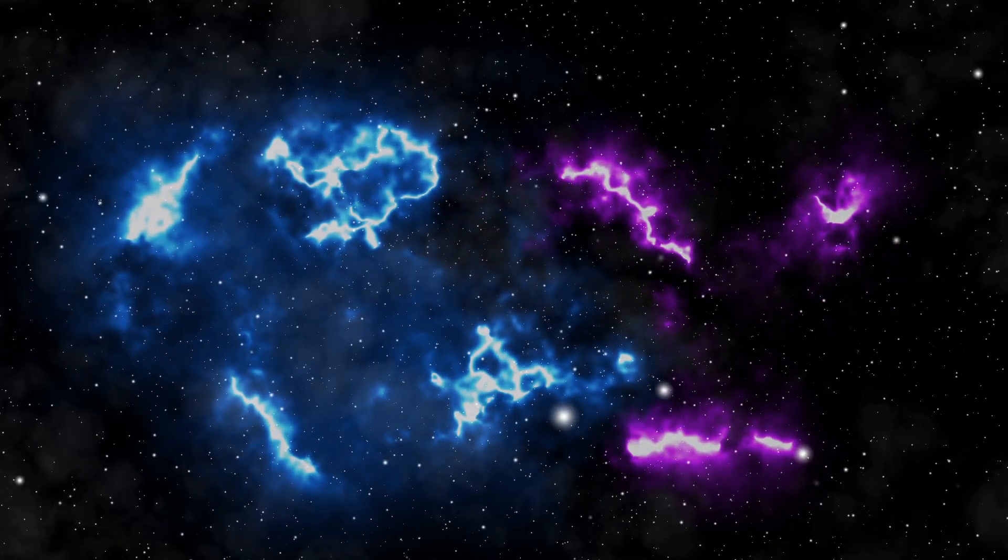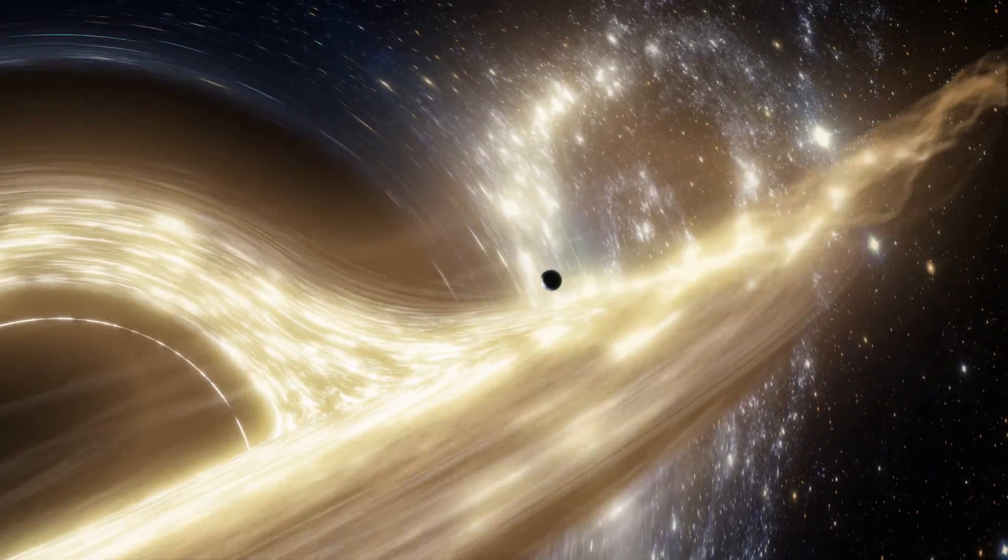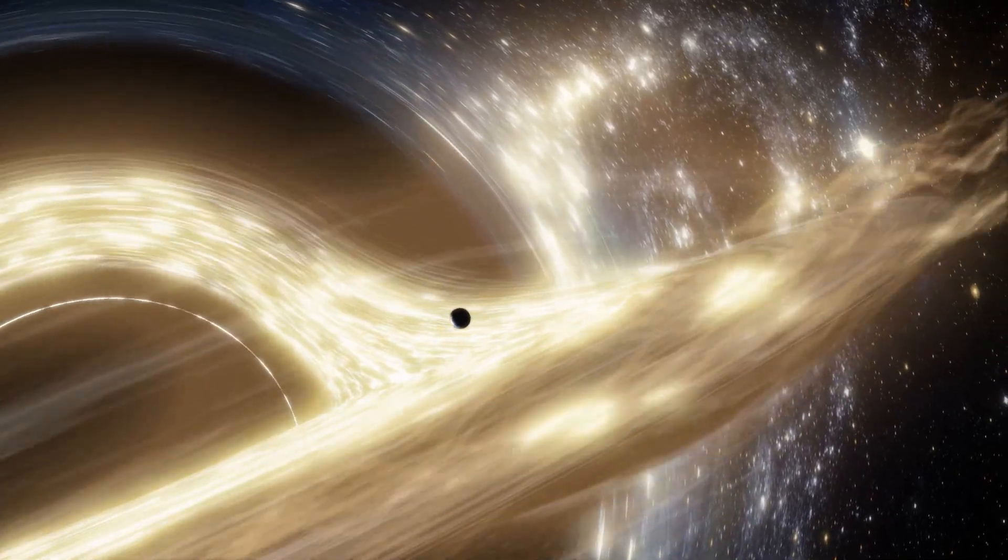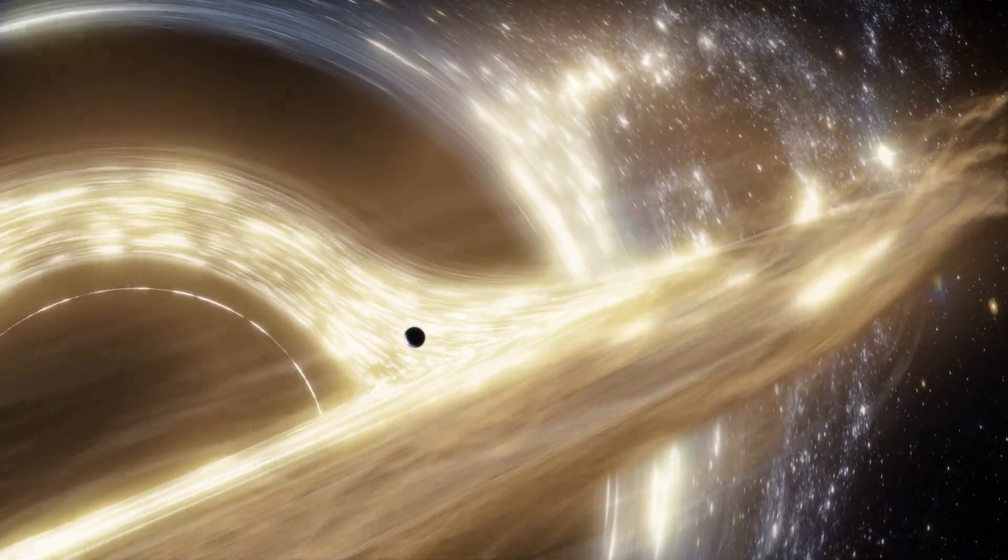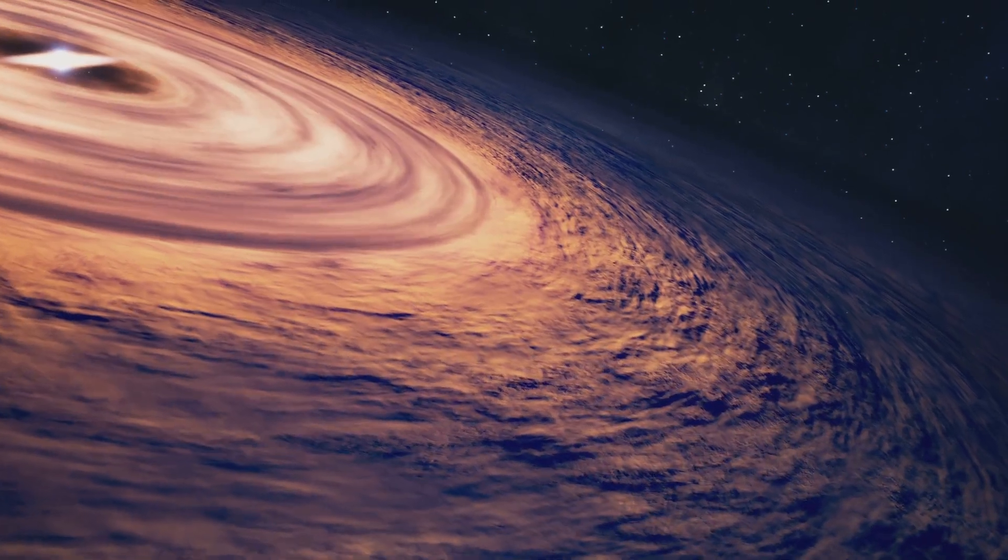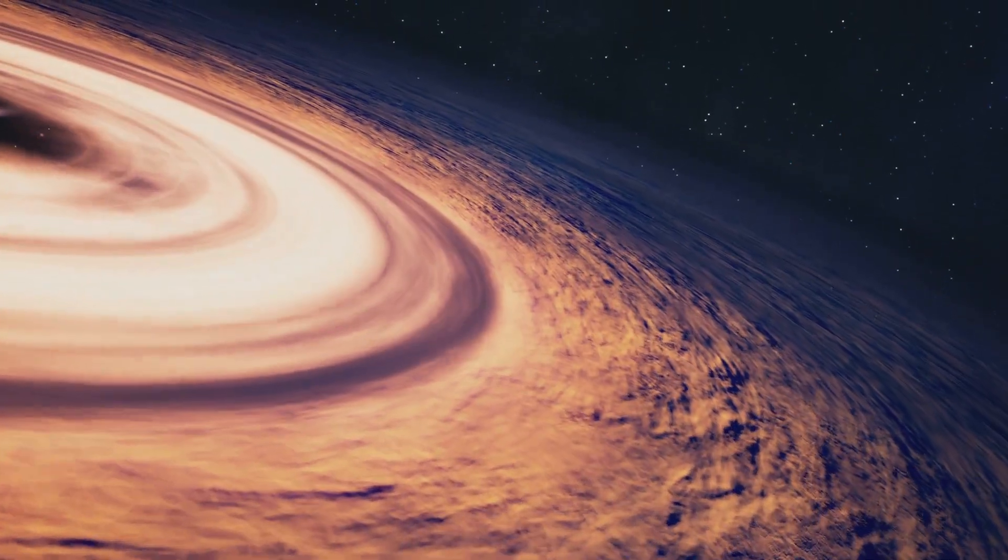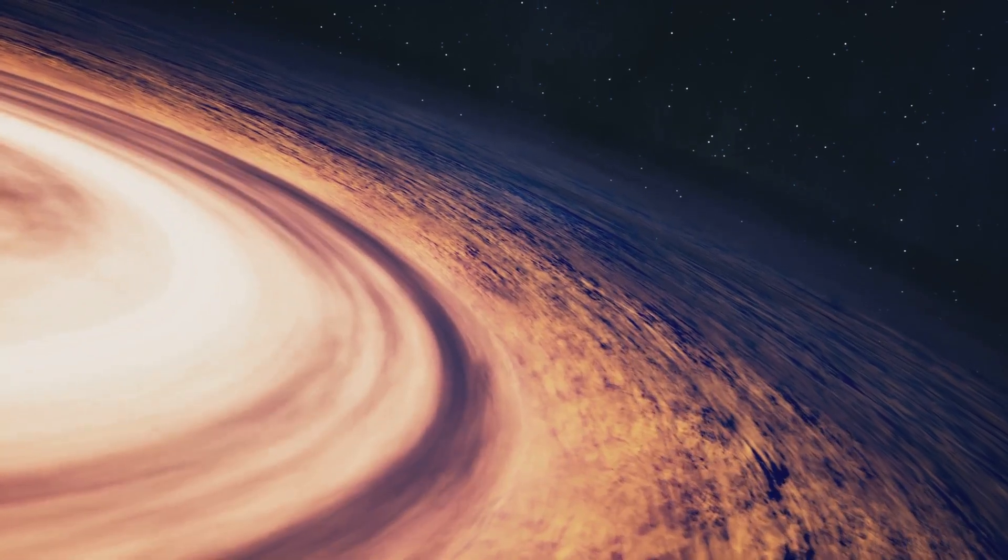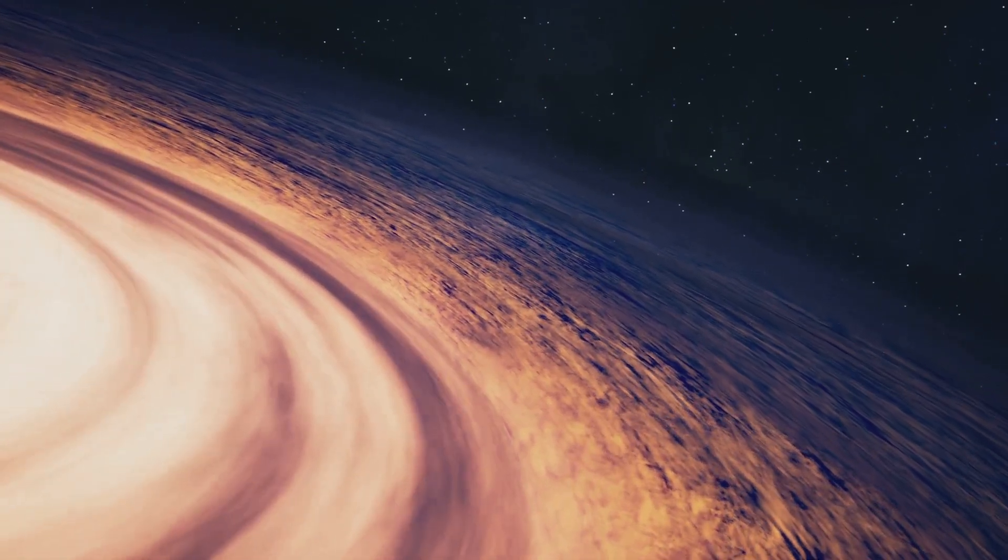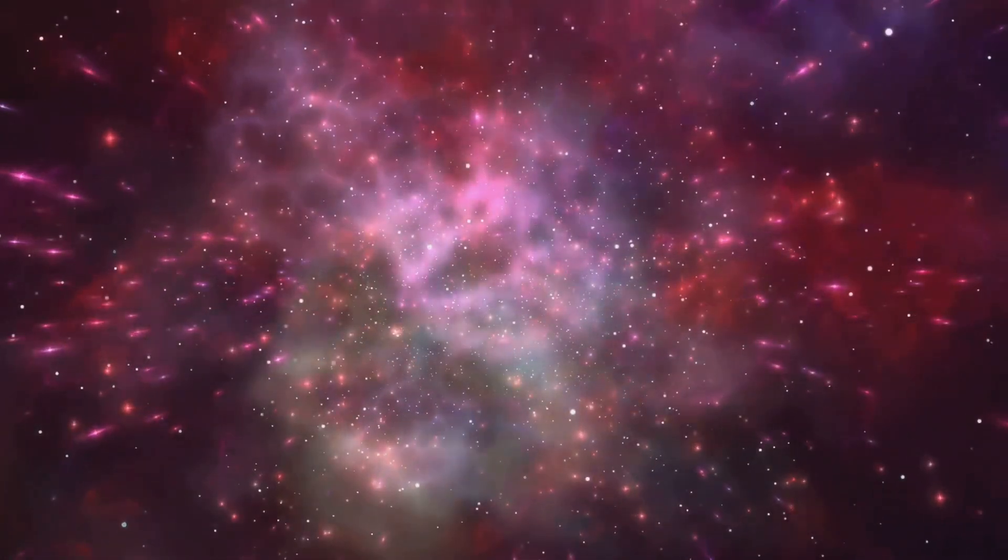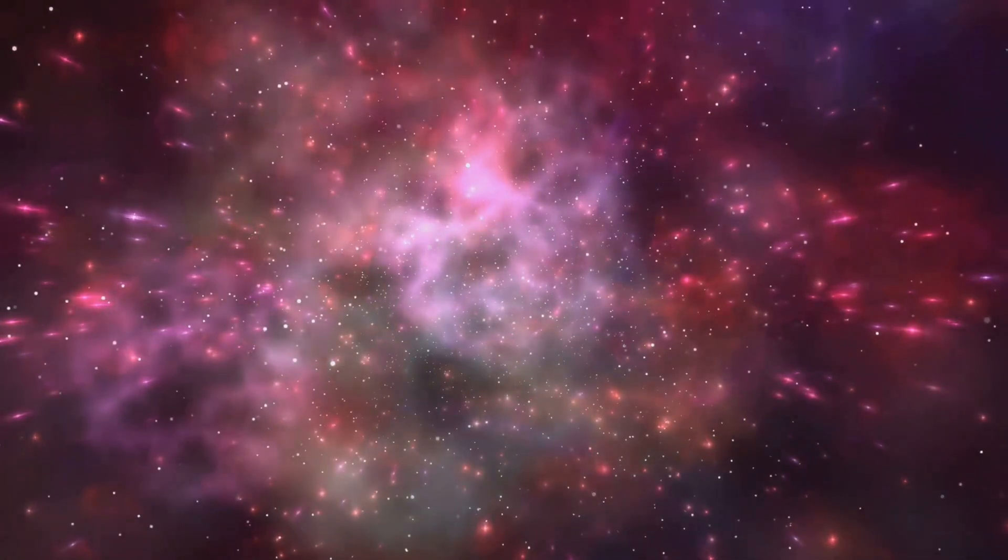Number 9, the Great Attractor. Our galaxy, along with millions of others, is being pulled towards a mysterious gravitational anomaly called the Great Attractor. This invisible behemoth exerts a force so strong that it's dragging us through space at a staggering 1.4 million miles per hour. But here's the scary part, we can't see it. Dust and gas obscure our view.